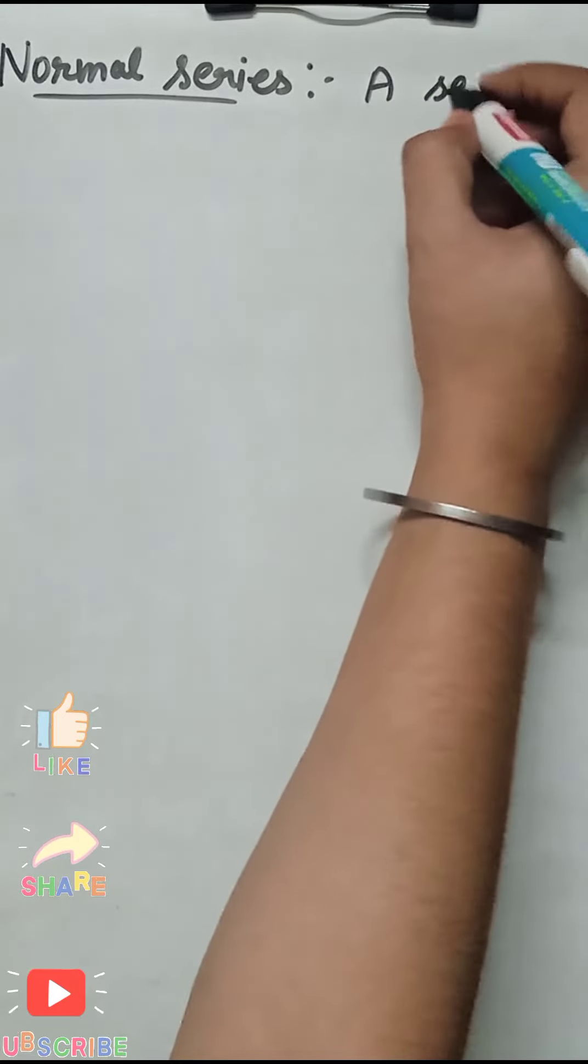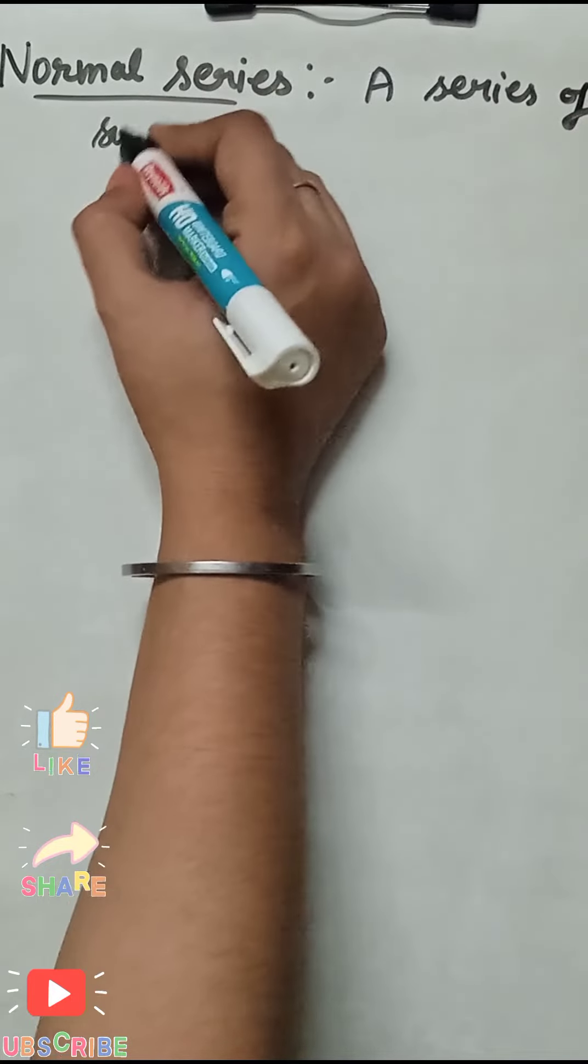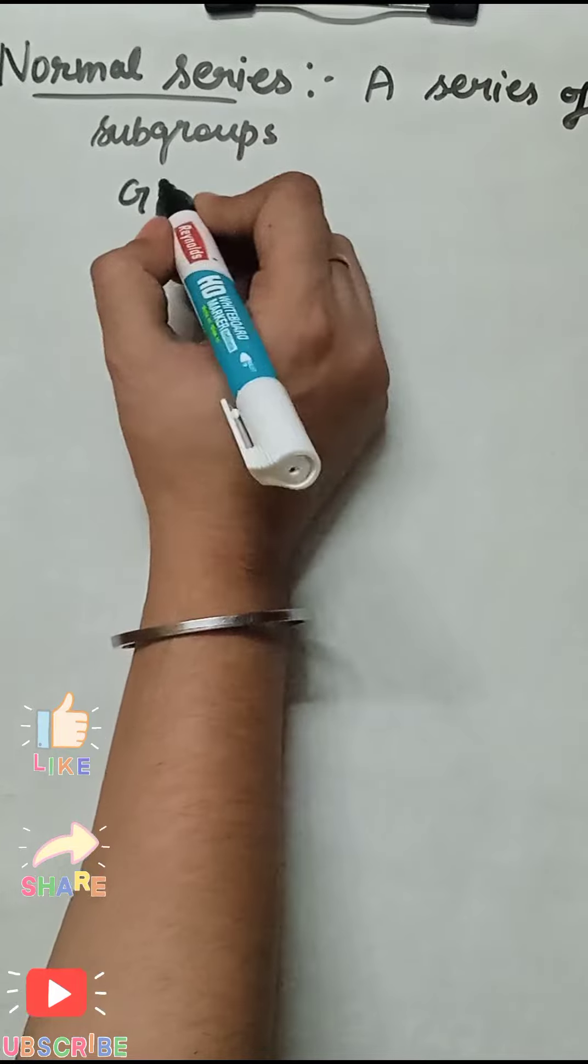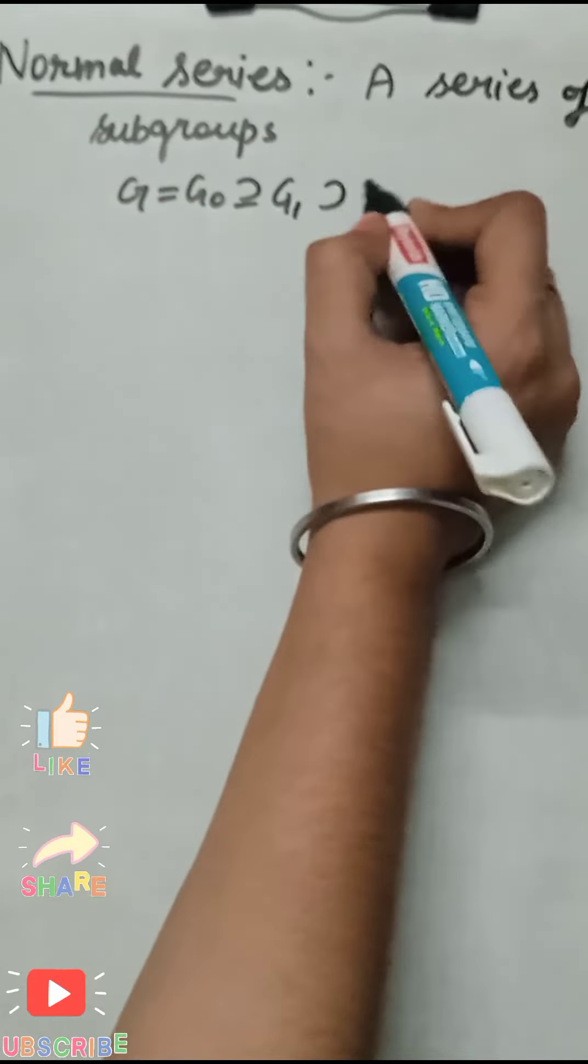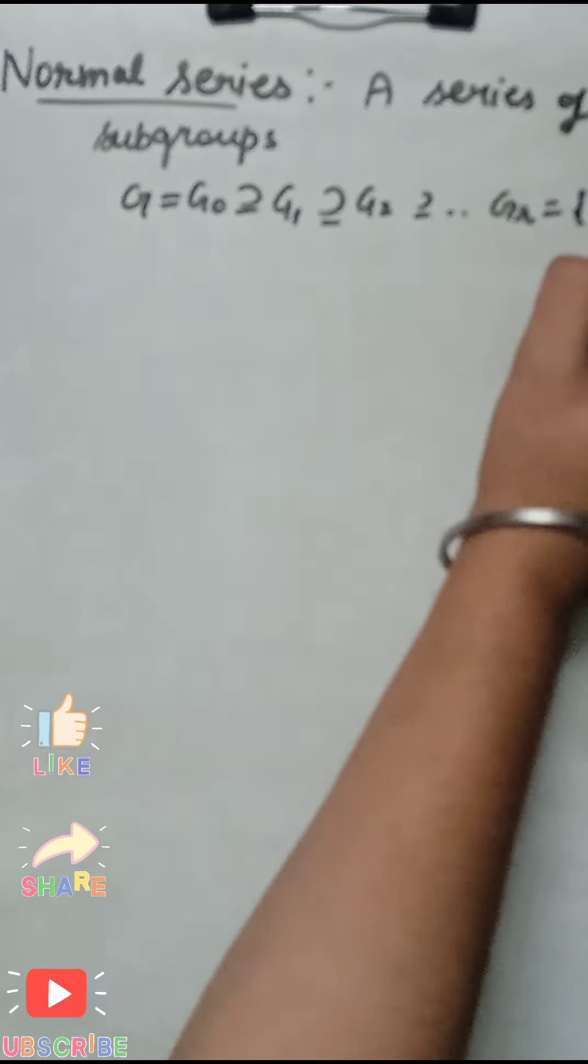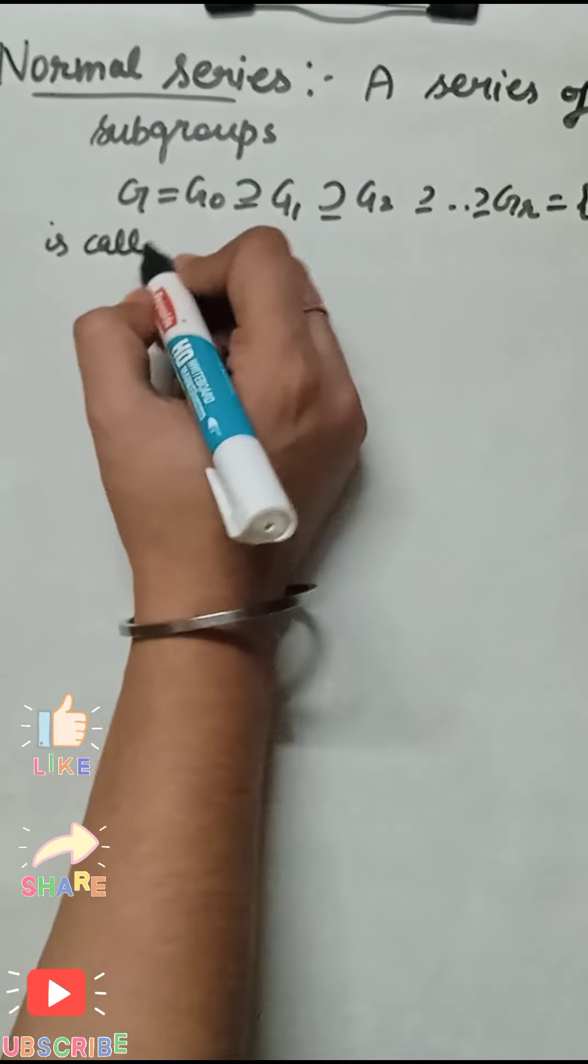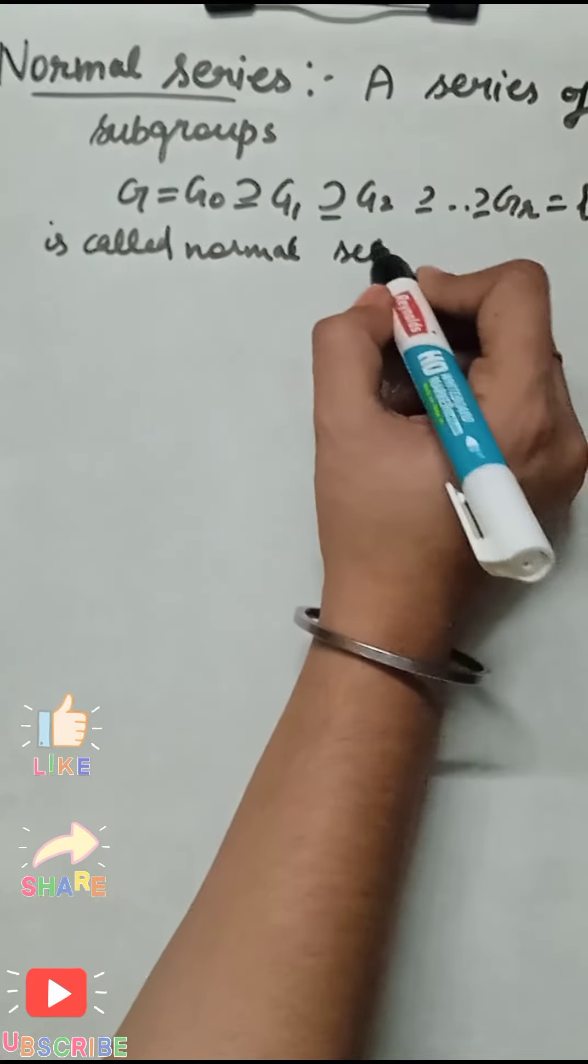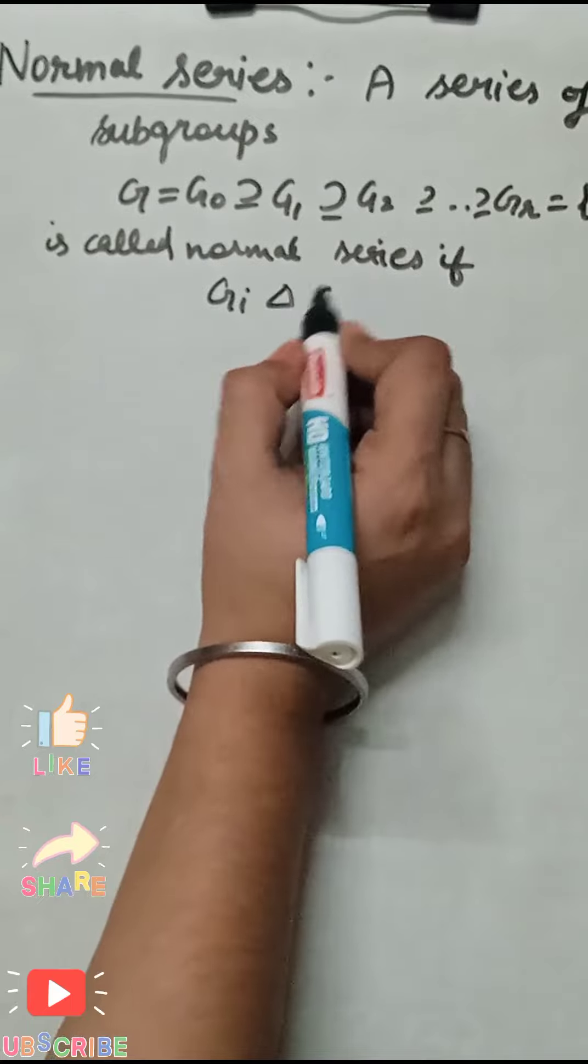A series of subgroups G = G0 ⊇ G1 ⊇ G2... ⊇ Gr = {e} is called a normal series if Gi is normal in G.